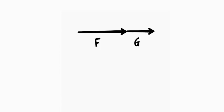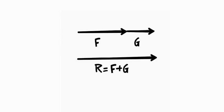Now let's take a vector f and another one g. These two vectors are coplanar and also collinear, that is acting on the same plane and parallel to each other on the same line. In this case, if you want to find the resultant r of the addition of f and g, we simply add the magnitudes. The resultant magnitude will be the addition of the magnitudes of f and g, and the resultant will also act in the same direction as f and g.